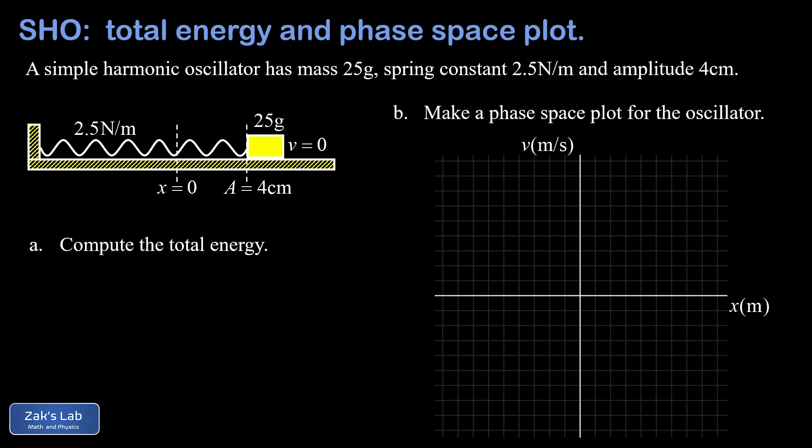We're given all the specs for this oscillator: the spring constant is 2.5 newtons per meter, the mass is 25 grams, and the amplitude is 4 centimeters. Note that I've already indicated in the diagram that when the mass is located at one amplitude away from the equilibrium position, the speed is zero—that's a turning point for the oscillator. At that point, there's no speed and no kinetic energy.